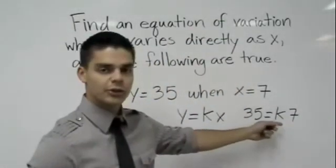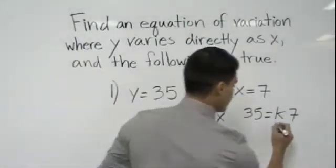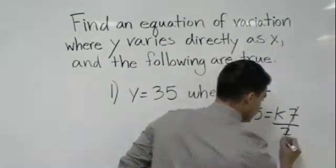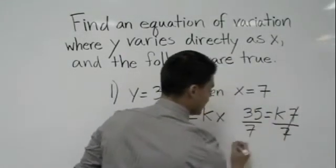So 35 equals K times 7. I divide by 7 and I get 5.